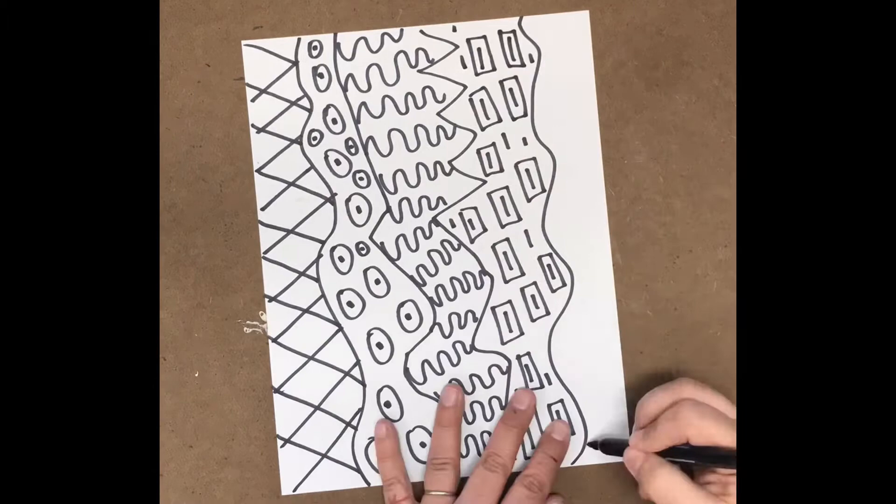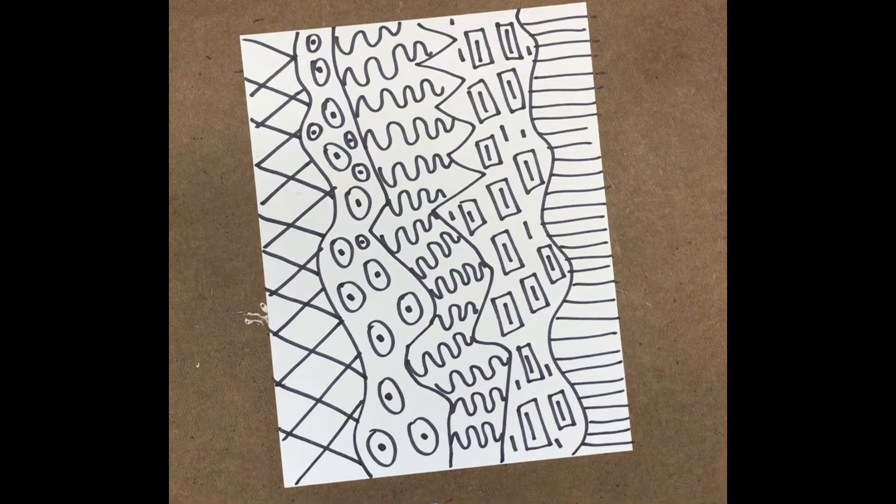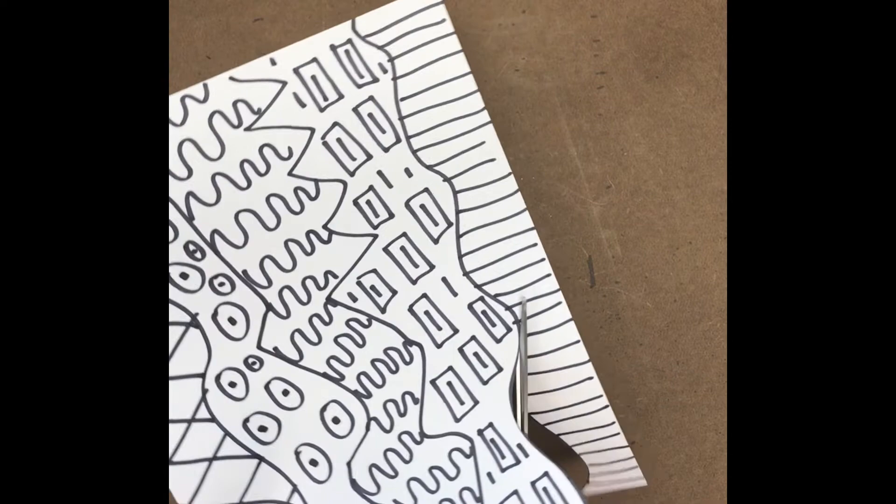The next thing we're going to do is just carefully cut on those vertical up and down lines that we drew. And I just want you to make sure you take care because you might get a little bit confused with all your patterns. But just try your best to cut those out as neatly as possible.